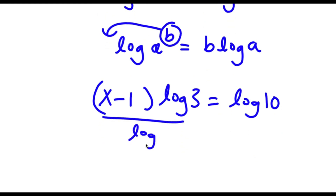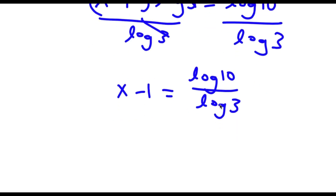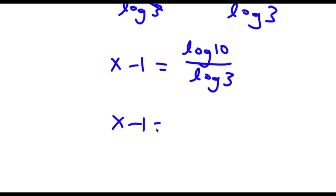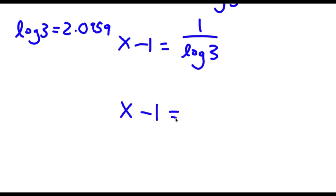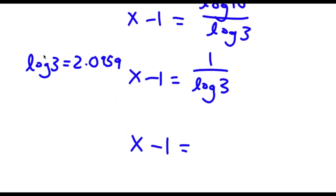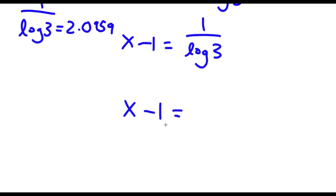Now if I divide both sides by log 3, these two cancel out and I'm left with x minus 1 is equal to log 10 over log 3. Now log 10 is actually equal to 1, so now I have x minus 1 is equal to 1 over log 3. And log 3 is equal to 0.4771. So 1 over log 3 is equal to 2.0959, meaning x minus 1 is equal to 2.0959.